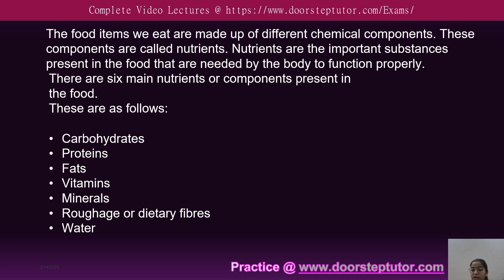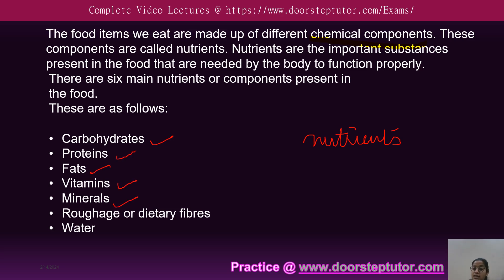Food items are made up of different kinds of chemical components, and these components are known as nutrients. Nutrients are important substances present in our food that we need for the proper functioning of our body. These include carbohydrates, proteins, fats, vitamins, minerals, dietary fiber — also known as roughage — and water. These are the seven important components in a diet.